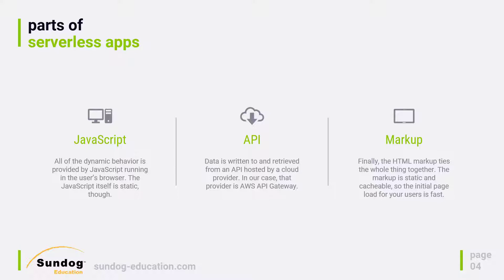The next component is the API. There are some operations that still need to happen in the cloud, usually for security reasons. For example, you don't want to be storing a database of users and their passwords on the browser. So you need some sort of an API to communicate between the JavaScript running on the client and the actual backend services in AWS. Instead of requesting customized HTML from the server, you're using JavaScript to call an API that you designed to get customized data back. That's what an API gateway provides — these APIs are generally RESTful web services using standard HTTP verbs such as GET, POST, PUT, DELETE, and PATCH to communicate with backend services.